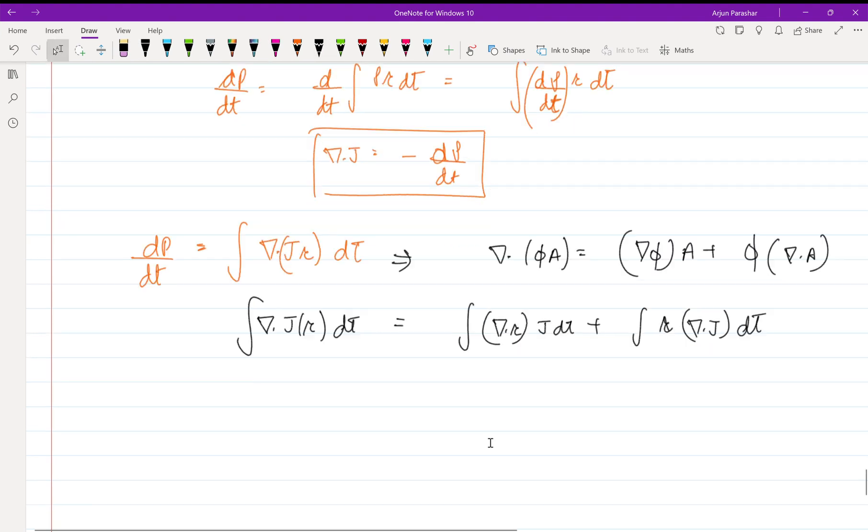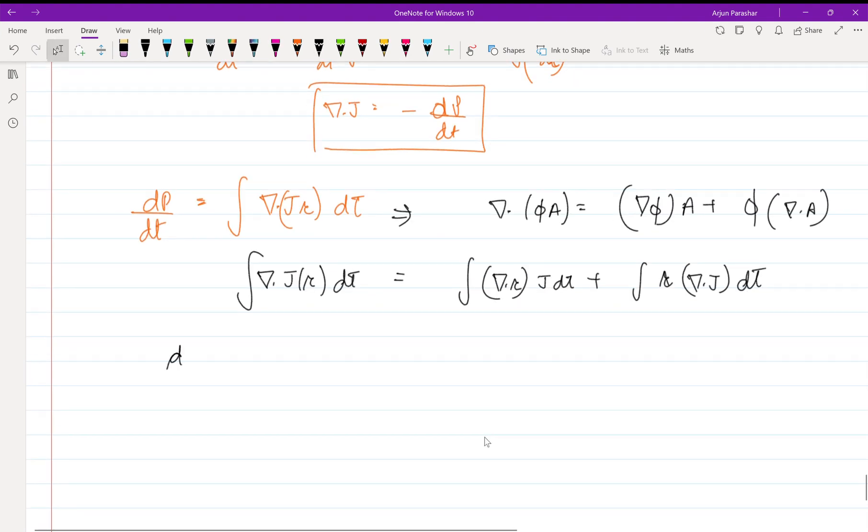On solving further, we get dp by dt is equal to integration j d tau plus integration r del dot j d tau over a closed volume.